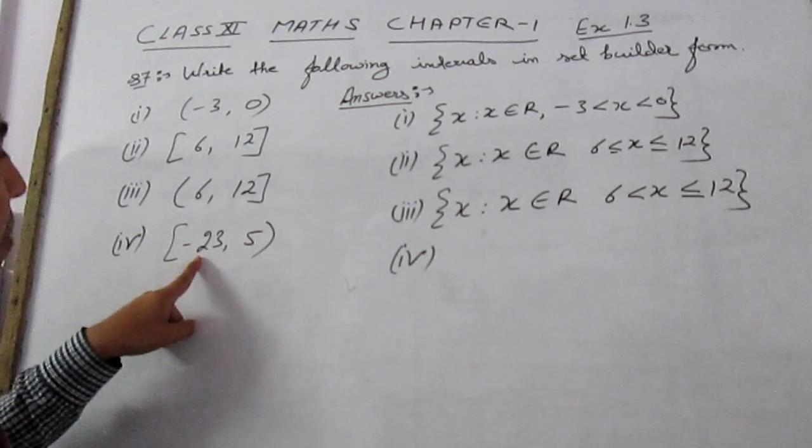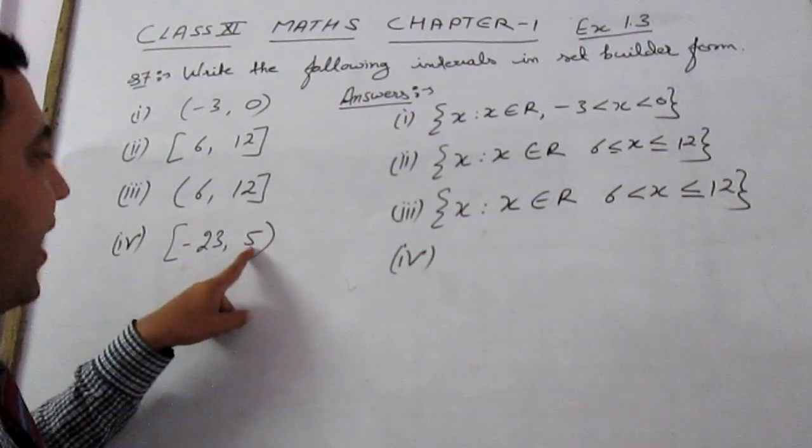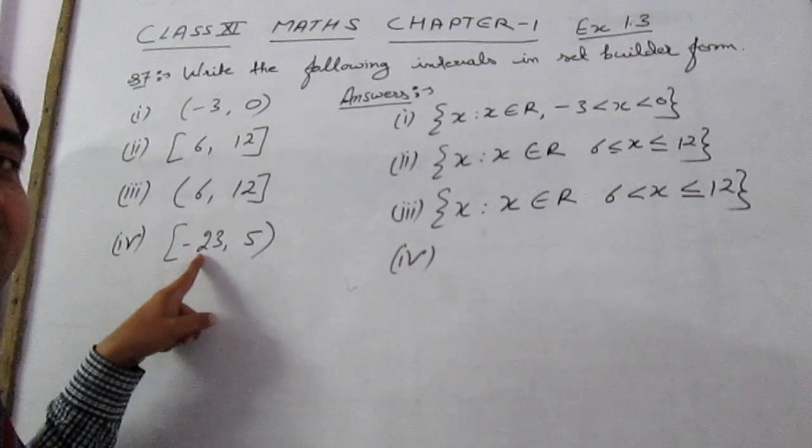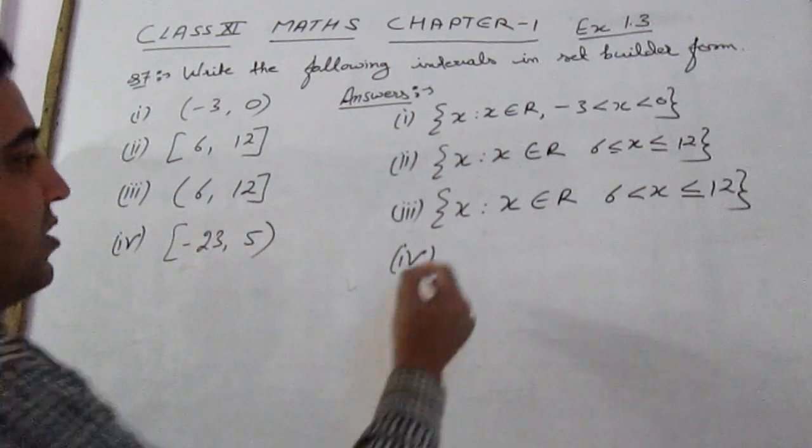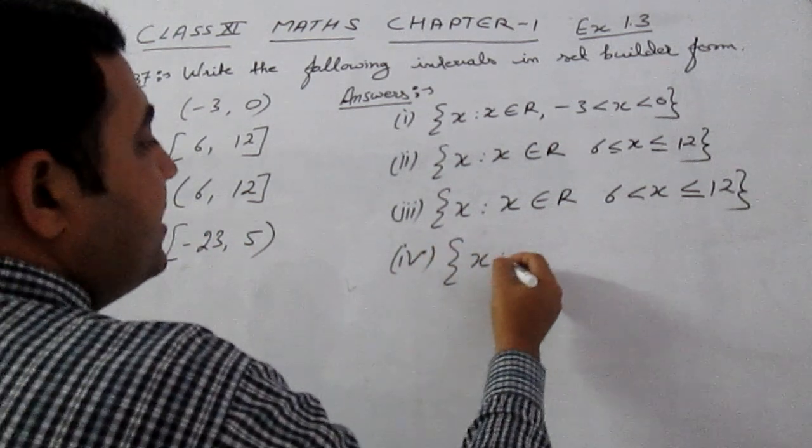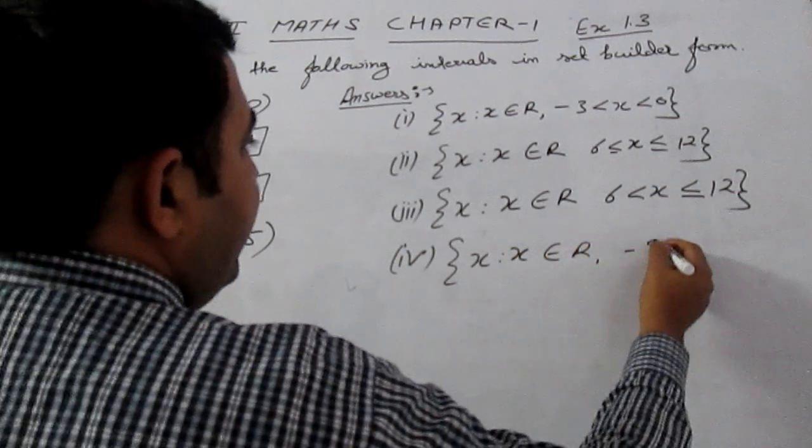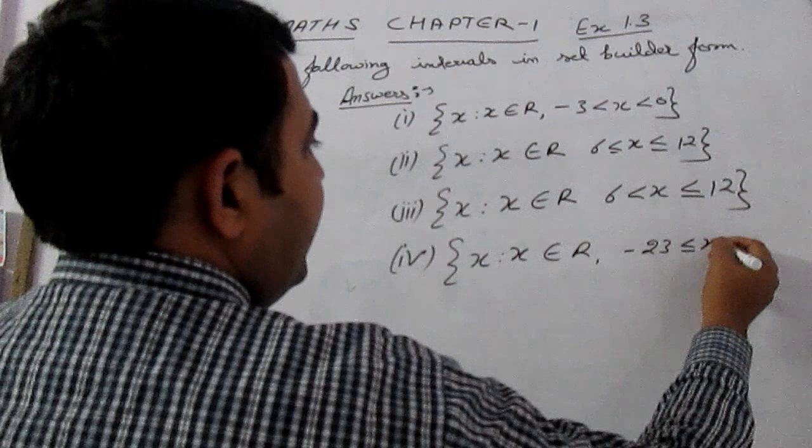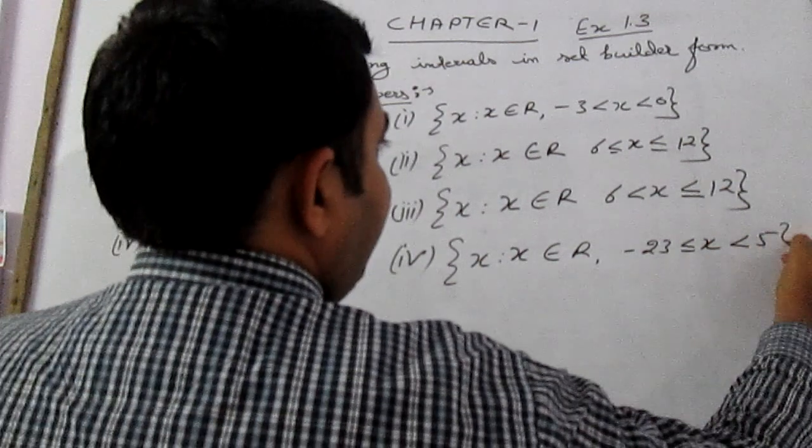And in fourth part we can see that the interval is from -23 to 5. -23 is included but 5 is not included. So x is such that x belongs to R, -23 is less than equal to x is less than 5.